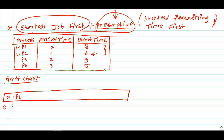We start executing P2 at 2 milliseconds. At instant 2, P3 also arrives, but comparing the three processes, P2 still has the least burst time. After 3 milliseconds, P4 arrives. Comparing all processes at that point, P2 still has less burst time. So after 3 milliseconds, all processes have arrived into the ready queue.